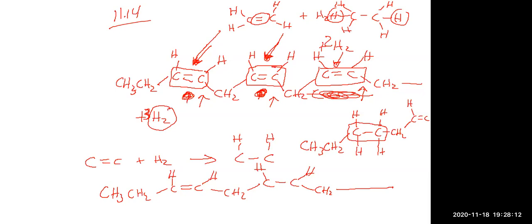So part A was talking about the three isomers: one isomer would be making the first double bond a single bond, the second isomer would be leaving the first as a double bond and making the second one a single bond, and the third isomer would be making the third one a single bond and leaving the first two as double bonds. And part B would be if you added three H2s — that would be enough to convert all of them into single bonds.